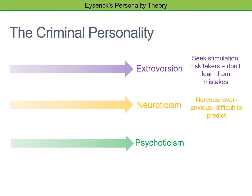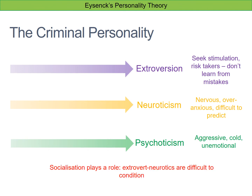People who score highly in psychoticism tend to be aggressive, cold, and unemotional. Eysenck did acknowledge that socialisation also plays a role. People who are extrovert neurotics tend to be difficult to condition purely because they don't learn from their mistakes, because they're difficult to predict, and because they tend to be over anxious.